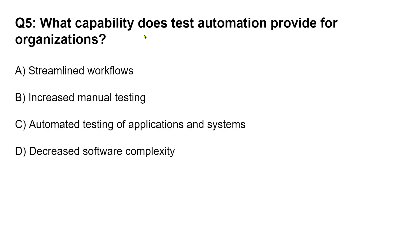Question five: What capability does test automation provide for organizations? Options are: A) Streamline workflows. B) Increased manual testing. C) Automated testing of application and systems. D) Decreased software complexity. What is the right answer out of this? Please comment for question five what you think is correct — don't worry about whether you're right or wrong, just try it out.